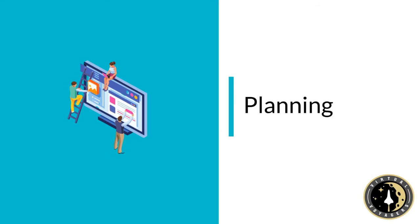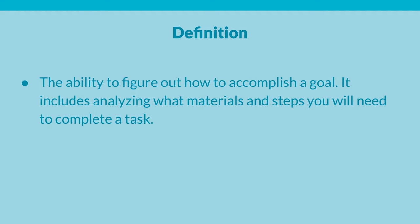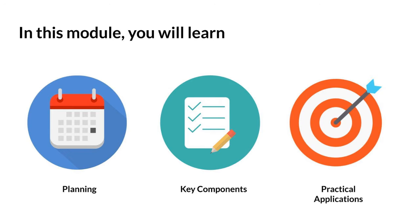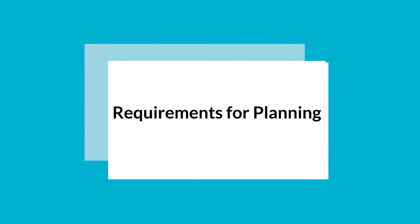Executive functioning: planning. Planning is the ability to figure out how to accomplish a goal. It includes visualizing the end result, outlining the steps to complete a task, and identifying needed resources or materials. In this video you will learn about the key components of planning and practical examples related to school requirements for planning.